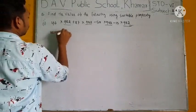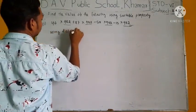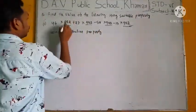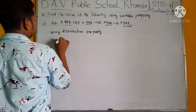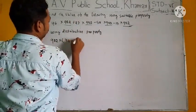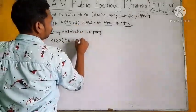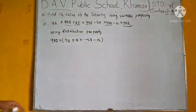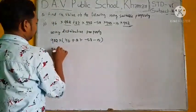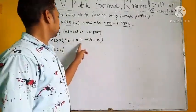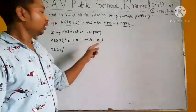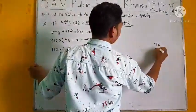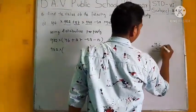What will be the answer? 982 will be common, remain 46 plus 27 minus 58 minus 15. Now solve this one. 982 into 46 plus 27, separately 46 plus 27, that is 73.